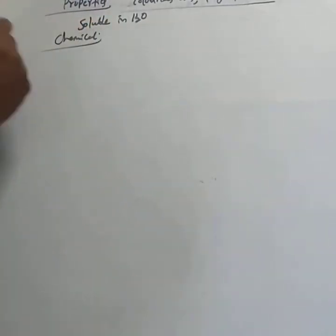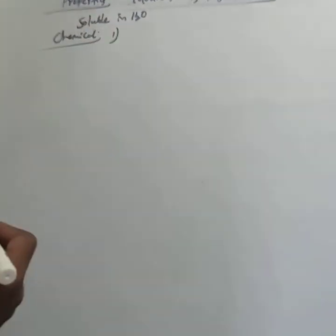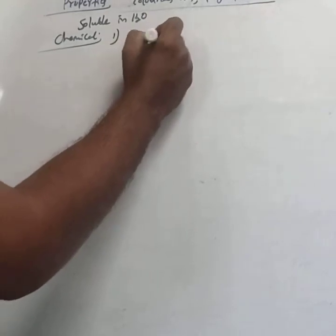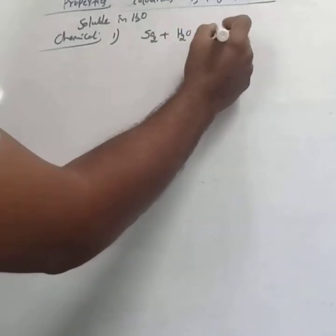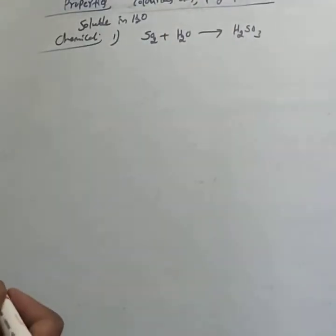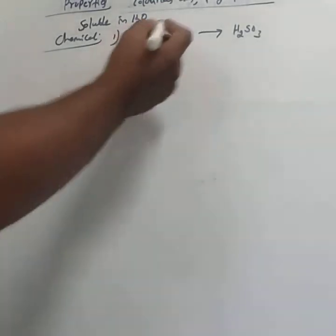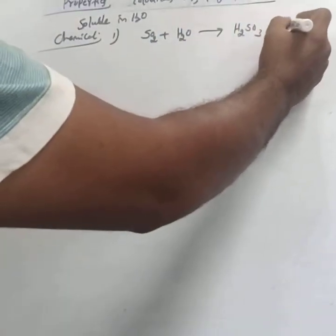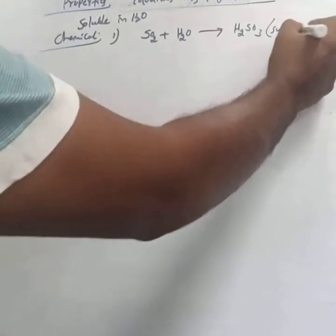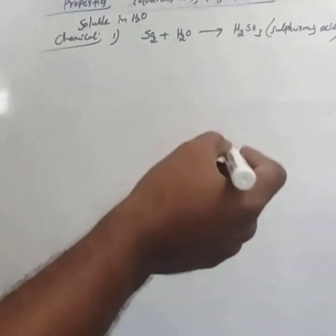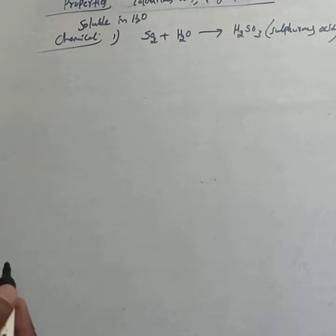Now consider the chemical properties. The first property is that sulfur dioxide reacts with water and forms sulfurous acid, H₂SO₃. When sulfur dioxide is dissolved in water, it produces sulfurous acid — not sulfuric. If you write H₂SO₄ that is sulfuric; H₂SO₃ is called sulfurous acid.